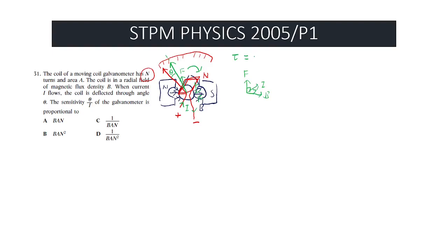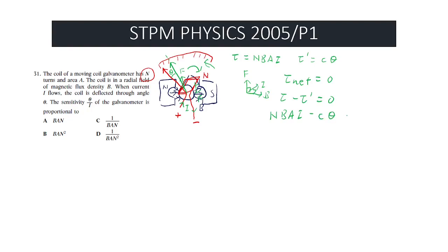The motion is given by torque T = NBAI. Since the pointer stops at a certain reading, the net torque is zero. That means there is another torque — let's call it a restoring torque — which opposes this motion. This is given by a constant multiplied by theta displacement. For net torque to be zero: NBAI - C·theta = 0. Therefore theta/I = NBA/C. We can see this sensitivity is proportional to B, A, and N.